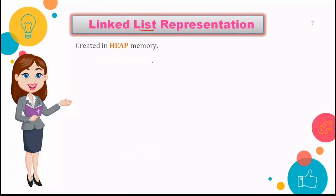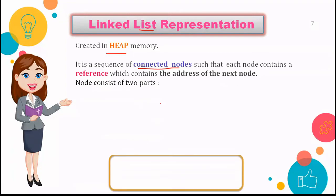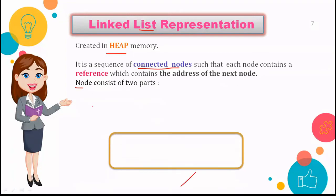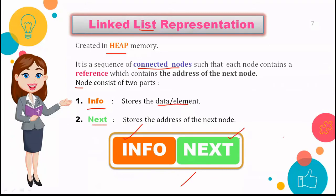Now let's understand the linked list representation. The linked list is basically created in heap memory. A linked list is a sequence of connected nodes such that each node contains a reference which holds the address of the next node. A node consists of two parts: the information part that stores the data or value, and the next part which stores the address of the next node.